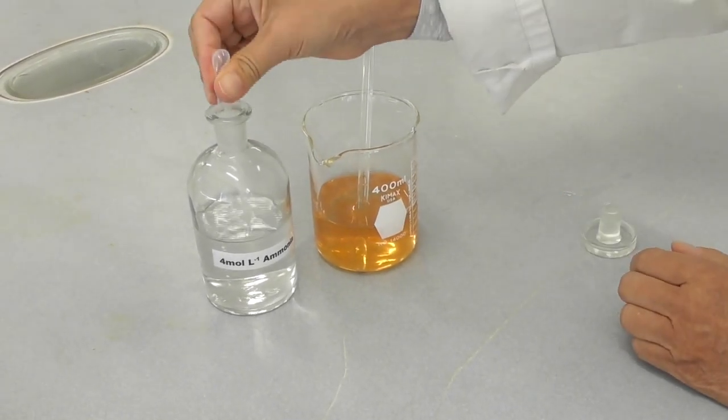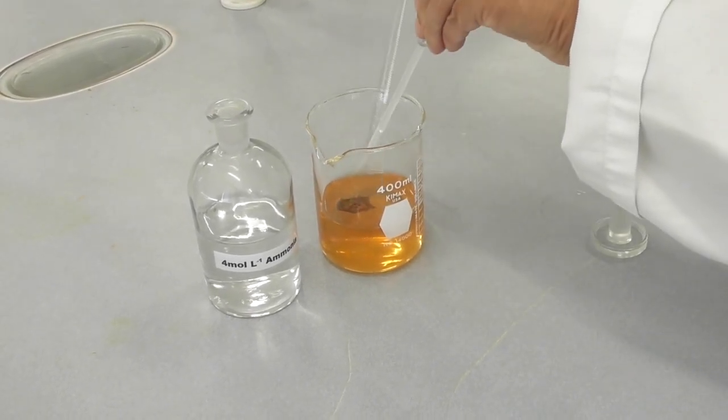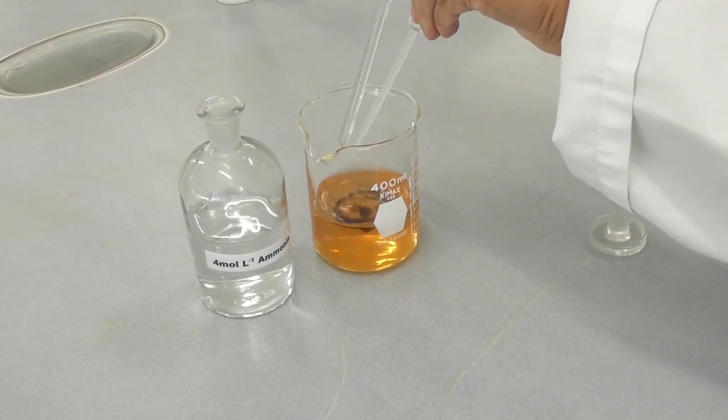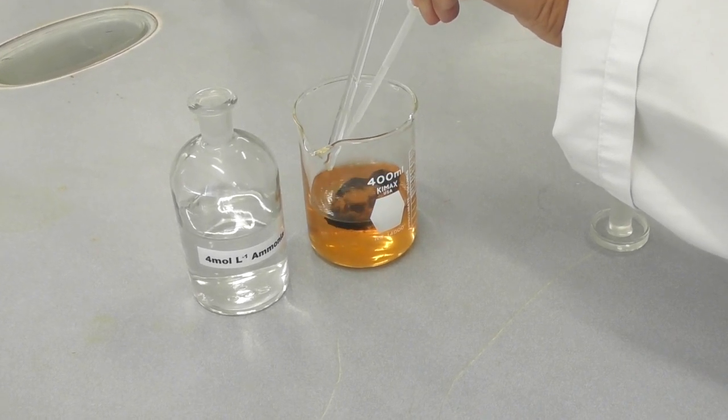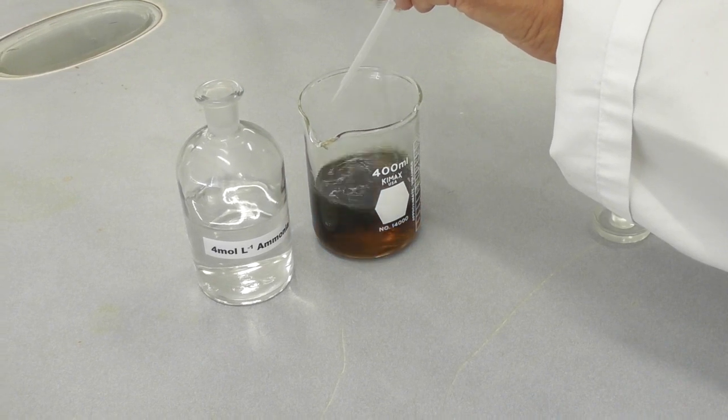Once everything is dissolved I start adding ammonia solution to my iron solution. As soon as I add ammonia, magnetite is formed, which you can see as black precipitate.